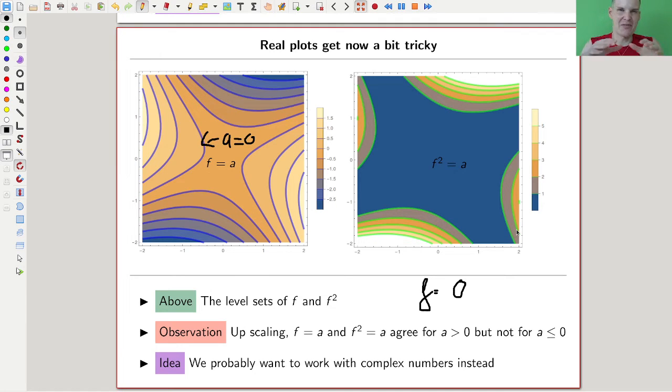This is f equals zero, for example. This is f equals zero. Then there's f equals one and f equals whatever, just goes up as you can see here from the scale—goes up and down. If you do that for the square, you get a somewhat different picture.